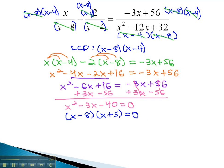We now can set each factor equal to 0. x minus 8 equals 0, and x plus 5 equals 0. And quickly find our solutions by adding 8 to get x equals 8, and subtracting 5 to get x equals negative 5.